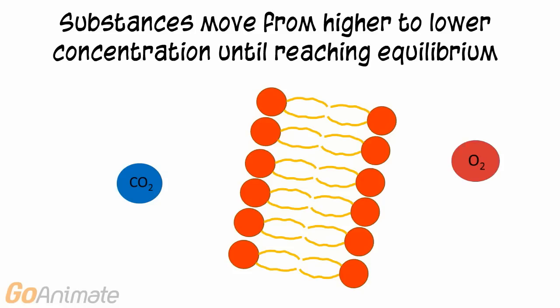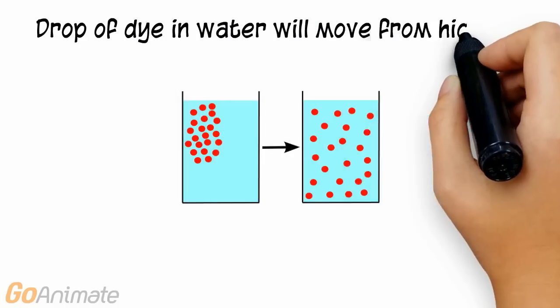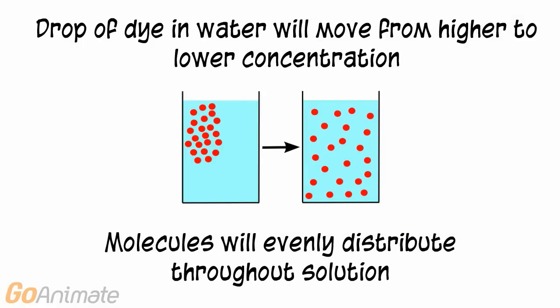In diffusion, substances move from higher to lower concentration until reaching equilibrium. Here is an example of diffusion. A drop of dye in water will move from where there is more dye, an area of higher concentration, to where there is less dye, an area of lower concentration. The molecules will eventually evenly distribute throughout the solution.